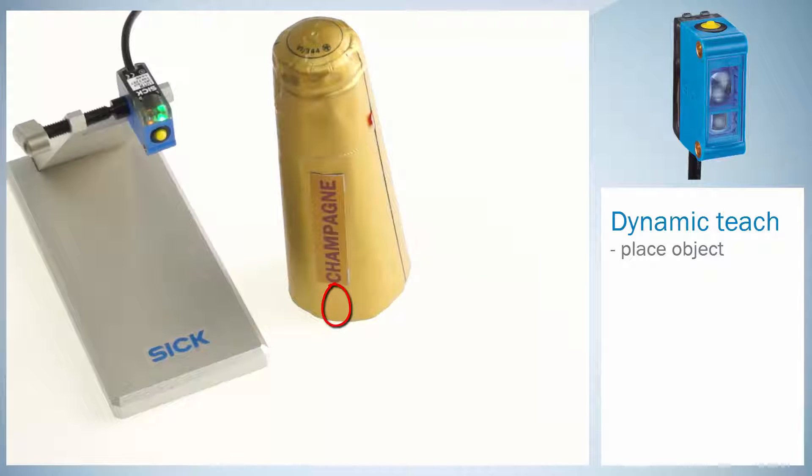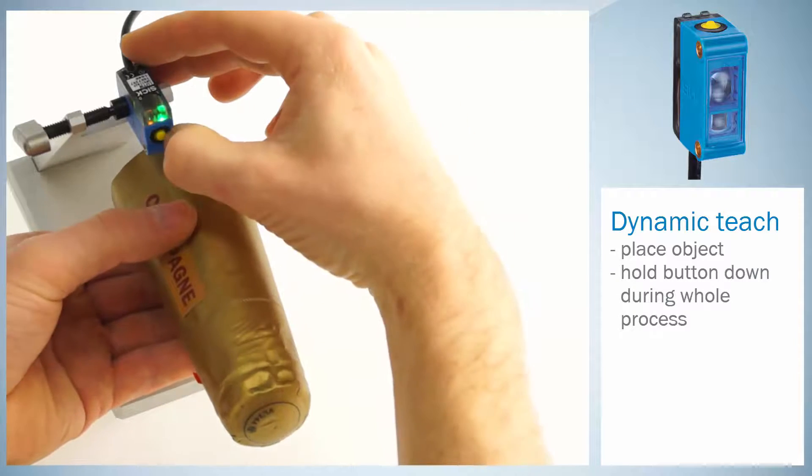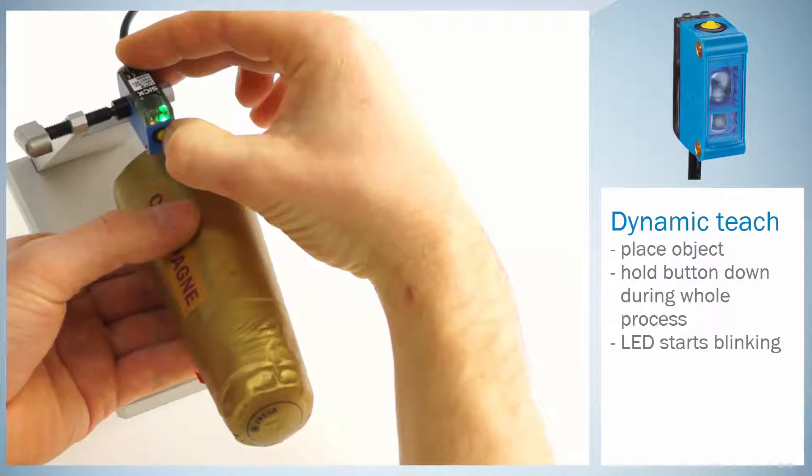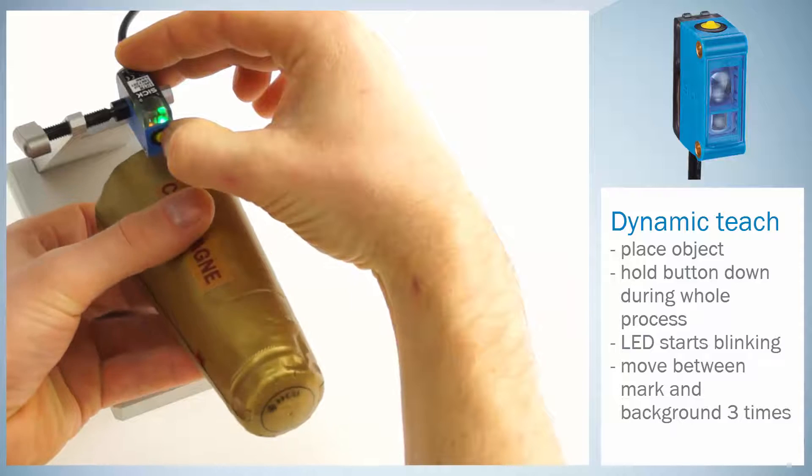For the dynamic teach-in, place the object under the light spot and hold the teach button down for the whole process. After three seconds, the LED starts blinking. Now, move the material between mark and background for at least three times.